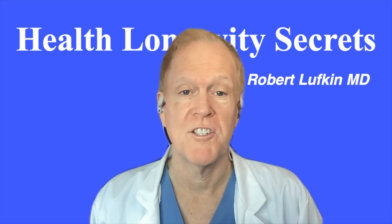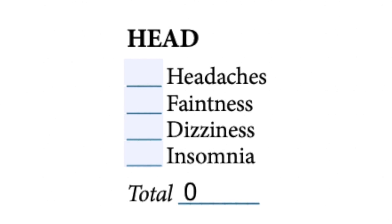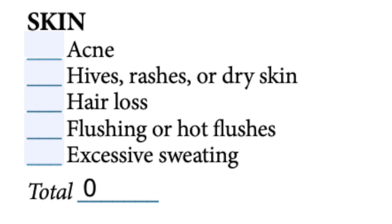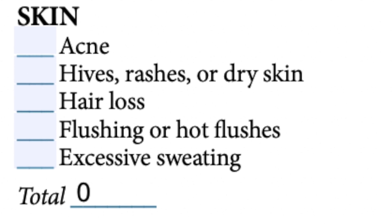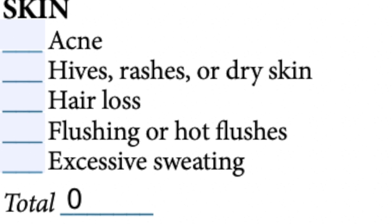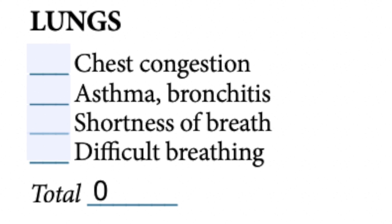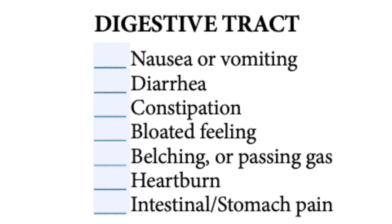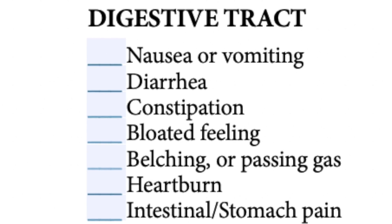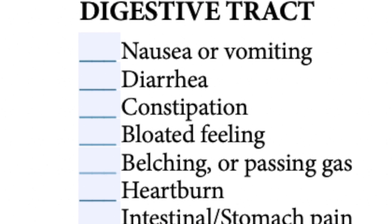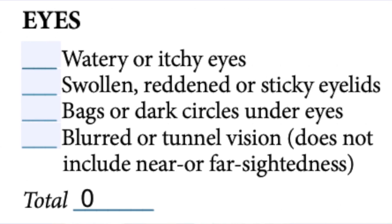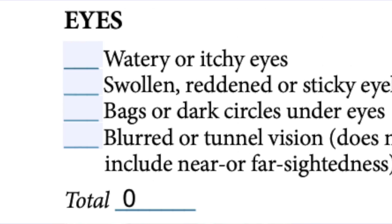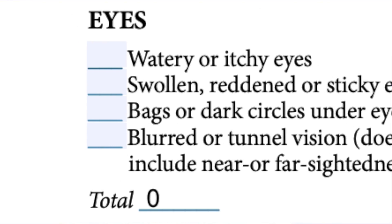Here are some of the sample questions. For the head, we can look at headaches, faintness, dizziness, and insomnia. For the skin, we can look at the presence of acne, hives, rashes, dry skin, hair loss, flushing, and excessive sweating. For lungs, we can look at chest congestion, asthma, and bronchitis. For the digestive tract, symptoms including nausea, vomiting, diarrhea, constipation, and heartburn. For the eyes, we can look at watery or itchy eyes, swollen redness, blurred vision, and many other symptoms in many other symptom areas.